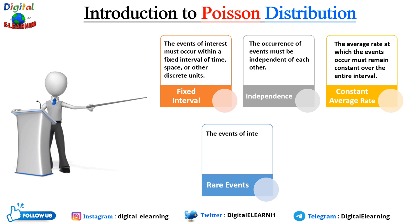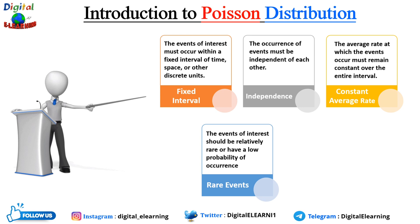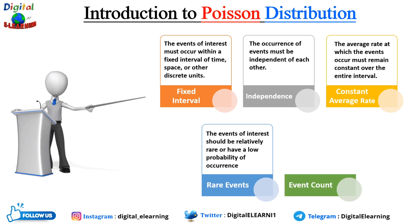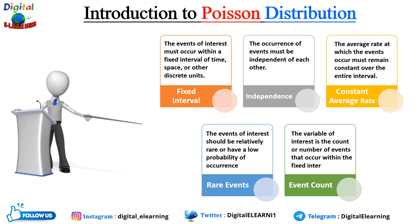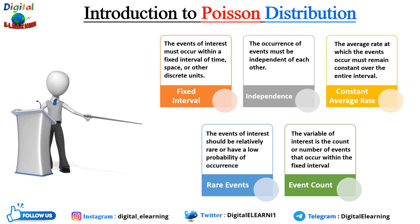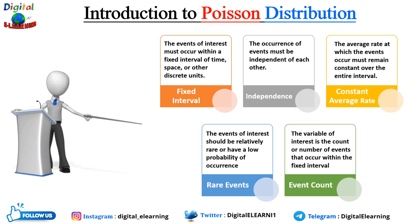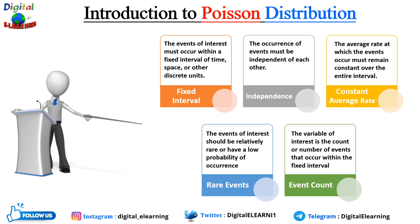Fourth, rare events: the events of interest should be relatively rare and have a low probability of occurrence. This condition ensures that the Poisson distribution is a suitable approximation, as it assumes that the probability of more than one event occurring in a very small sub-interval is negligible. Finally, the variable of interest is a count — the number of events occurring within the fixed interval. The Poisson distribution provides the probability of obtaining a specific count of events. It is an approximation and may not perfectly fit all situations, but it often provides a good approximation for events that satisfy these conditions.